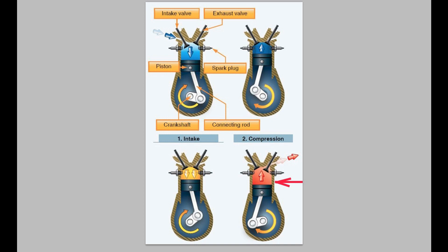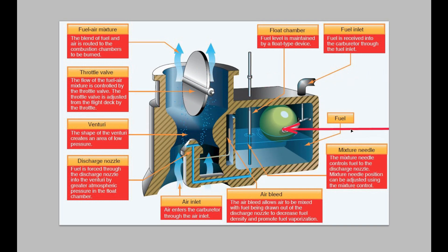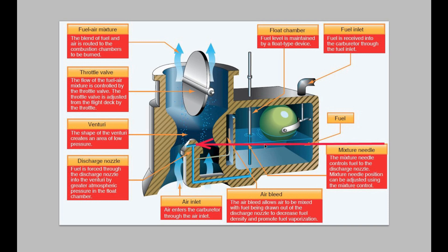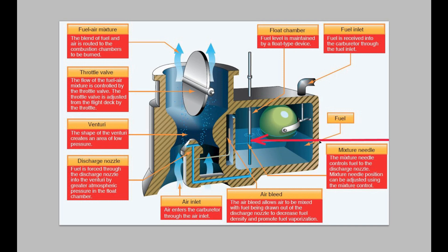Now let's look at the carburetor and see how it works. This is a cutaway of an updraft carburetor. What we're concerned with is the mixture needle — this is what we're operating when we use the mixture control. This needle controls the amount of fuel that gets to the fuel nozzle. As the piston goes down, air is drawn up through the carburetor and mixes with the fuel. The position of this rod determines how much fuel is drawn in — that's how we control the air-fuel mixture.